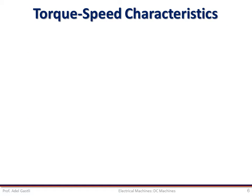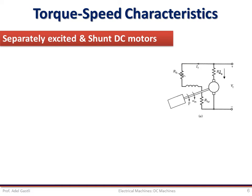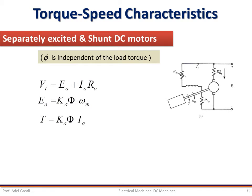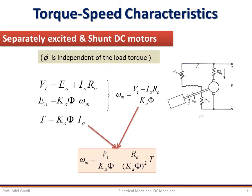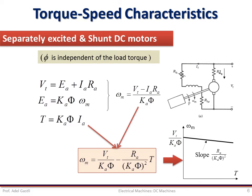Now let us determine the relation between DC machine torque and speed variables — the torque-speed characteristic. Starting with the separately excited and shunt DC motors: the field flux is independent of the load current and load torque. Going back to the machine equations developed earlier, we can deduce the speed expression, and using the expression of developed torque, find speed as a function of developed torque. This equation represents a line with a negative slope, which can be plotted accordingly.